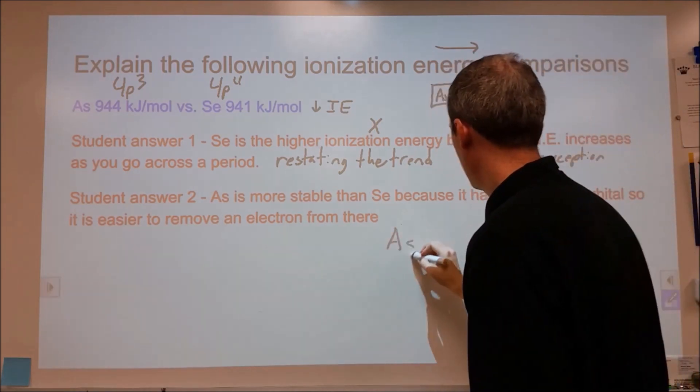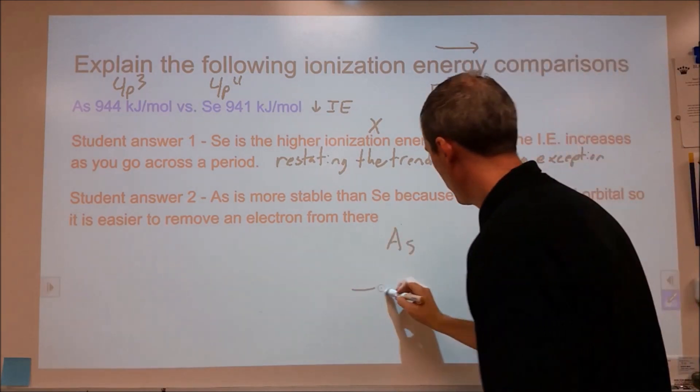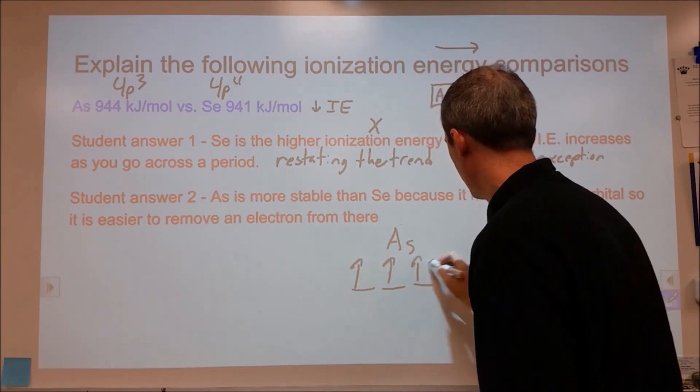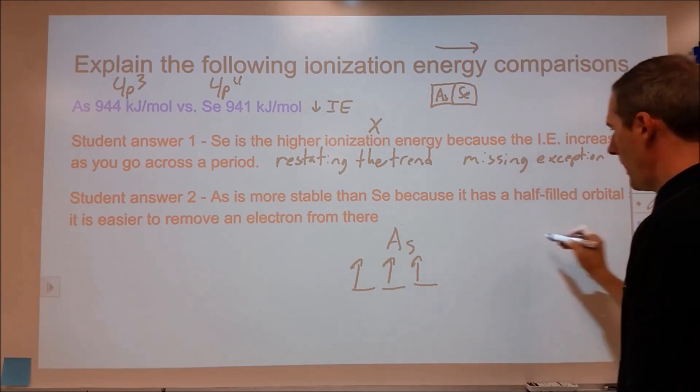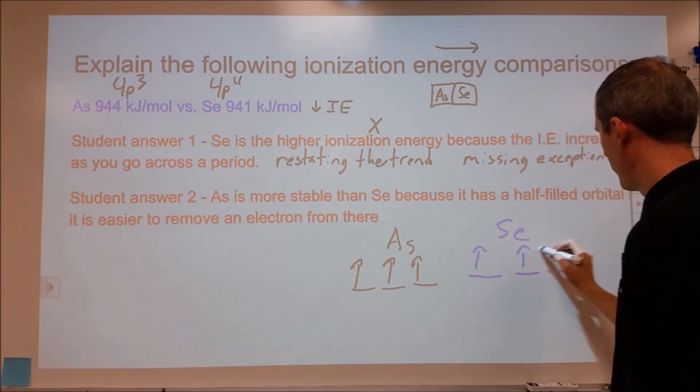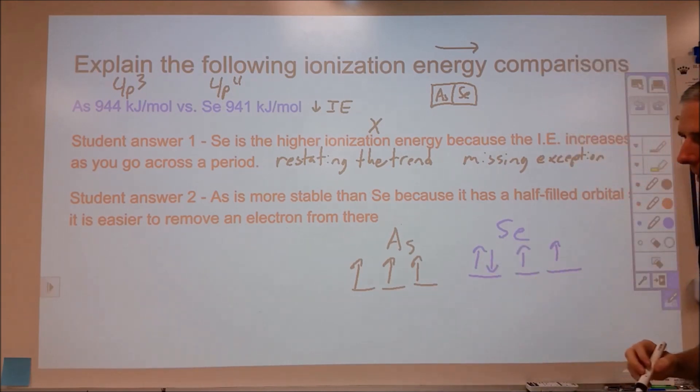So let's actually draw this out. If we're looking at arsenic and selenium, arsenic is going to be 4p3, so let's put together an orbital diagram. So there's arsenic, and for selenium, we have 4p4, so we're going to put our three electrons in, same spin, and then our fourth one goes like that.